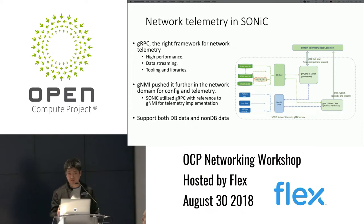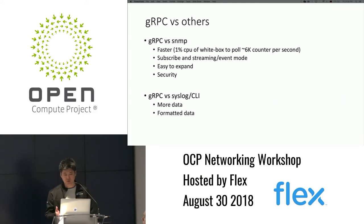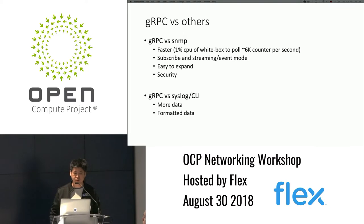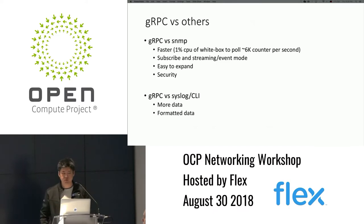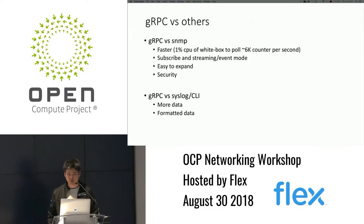My name is Jenkins Xu from LinkedIn. I'm a software engineer working on Sonic. Just to recap a little about the gRPC approach: if you compare gRPC to SNMP, it's much faster. Usually SNMP polling interval is probably 30 seconds or minutes, whereas for gRPC, if we do a one-second poll interval, we can pull like 6,000 counters per second using only about 1% of CPU on a regular white box.